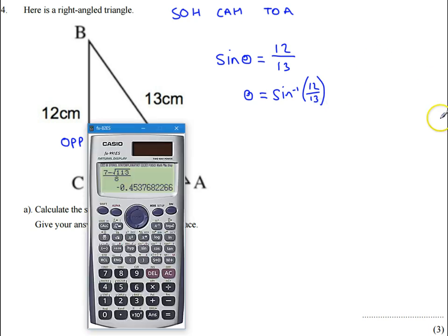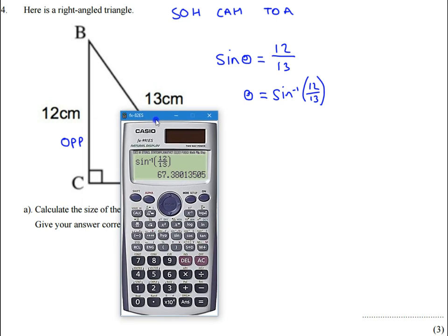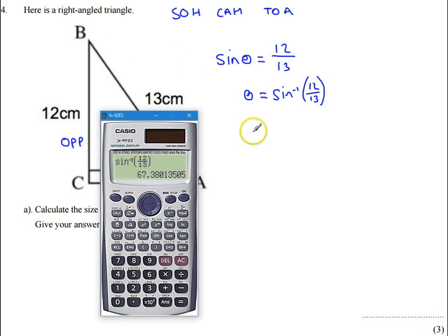So now, using my calculator, I can say, well, I've got the inverse sine of 12 divided by 13. And that should tell me that my angle is 67.4 degrees to one decimal place.